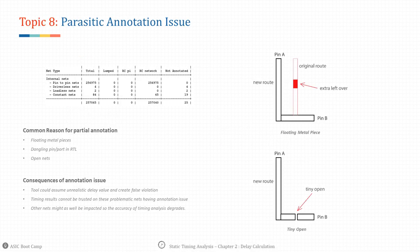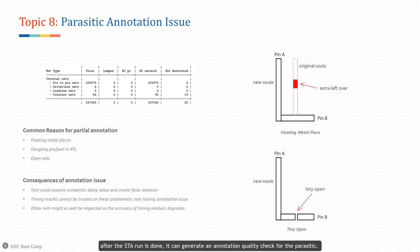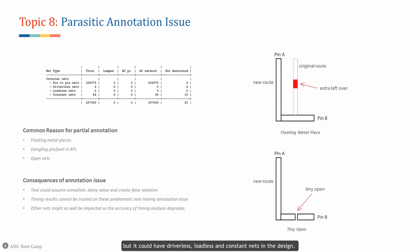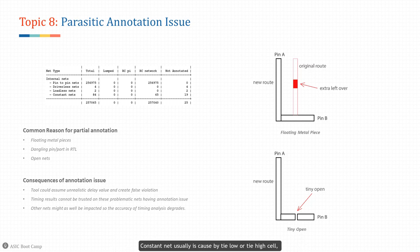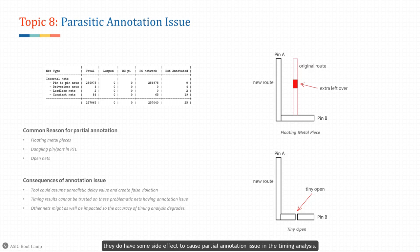Parasitic annotation issues: in STA tools like PrimeTime, after the STA run is done, it can generate an annotation quality check for the parasitic. What we care most about are the internal pin-to-pin nets, but there could be driverless, loadless, and constant nets in the design. Driverless nets mean the net is not driven by any cells, so its input is left dangling. Loadless nets don't go anywhere and are just floating. Constant nets are usually caused by tie-low or tie-high cells representing hard-coded values. Even though these three special net categories are not uncommon, they can cause partial annotation issues in timing analysis.